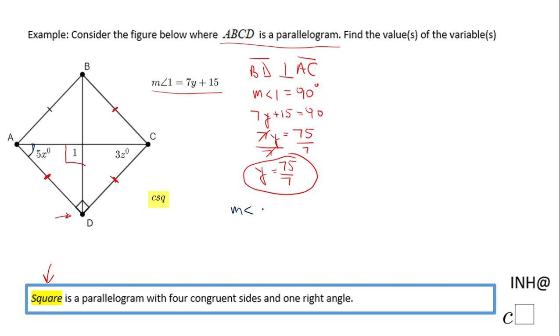I'm going to write the measure of angle CAD is 45 degrees—it's half of angle BAD, which is 90 degrees. So that means 5x equals 45. Divided by 5, we get x equals 9.